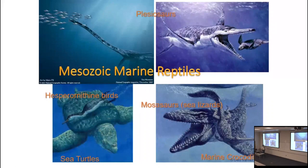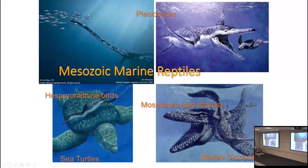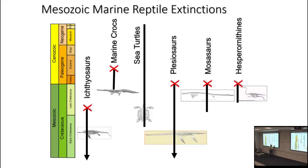Among marine reptiles, plesiosaurs die out utterly — both long-necked and short-necked forms. Mosasaurs die out utterly. Hesperornithine birds die out utterly. On the other hand, sea turtles and marine crocodilians managed to survive. Ichthyosaurs were already dead, having died out at the beginning of the late Cretaceous. Diversosaurs made it through and would die out later, but plesiosaurs, mosasaurs, and hesperornithines all die out at this event.